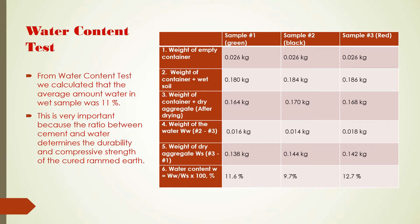From the water content test, we calculated that the average amount of water in the wet sample was 11%. This is very important because the ratio between cement and water determines the durability and the compressive strength of cured rammed earth.